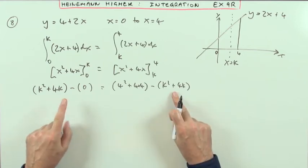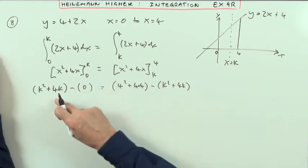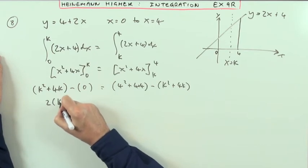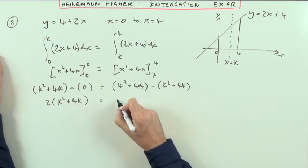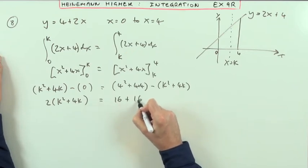Now that could join that side, because then I've got two of those. So if this comes over to here, I've got two times k squared plus 4k equals 16 plus 16.